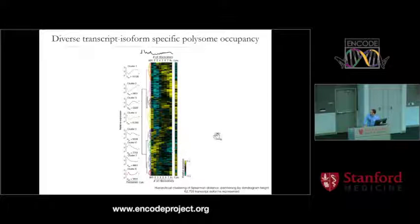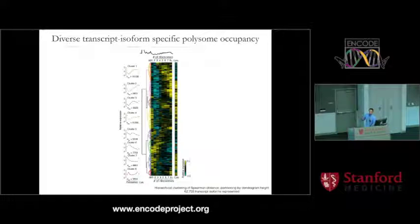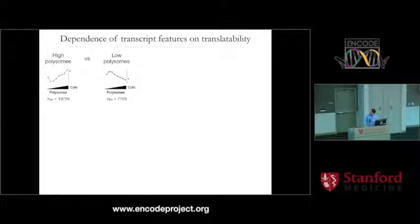I thought this would be particularly interesting for this audience because it gives you a plot where in HEC-293 cells you have about 62,000 transcript isoforms, and for each one you now know how many ribosomes are actually bound. This means that for a given RNA sequencing dataset, you can actually use this as a filter to apply translational information onto that RNA-seq data.